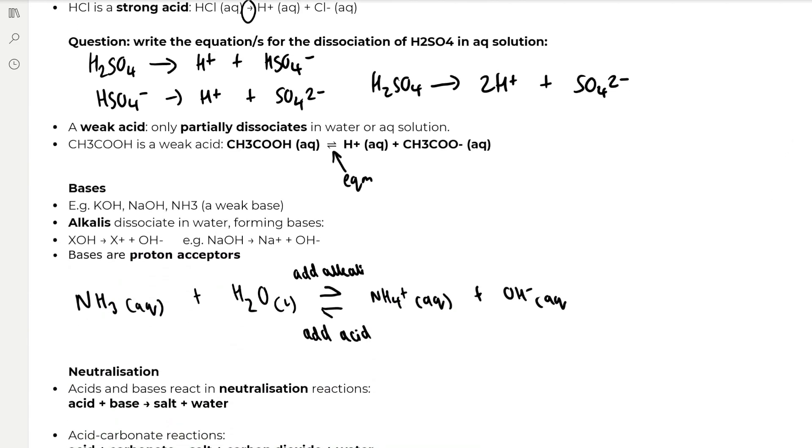Then a weak acid is one which only partially dissociates in water or aqueous solution. For example, ethanoic acid CH3COOH is a weak acid, and you can see that in the equation for its dissociation we have the reversible reaction symbol because there's an equilibrium forming where equilibrium is actually shifted to the left. So for each amount of ethanoic acid we're only forming a small number of H+ ions.